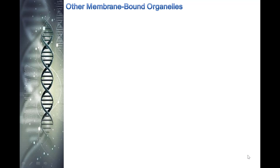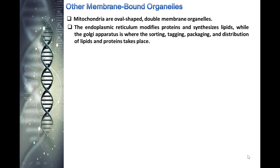Other membrane-bound organelles: mitochondria are oval-shaped, double-membrane organelles that have their own ribosomes and DNA. These organelles are often called the energy factories of a cell because they are responsible for making adenosine triphosphate. The endoplasmic reticulum modifies proteins and synthesizes lipids, while the Golgi apparatus is where the sorting, tagging, packaging, and distribution of lipids and proteins take place.